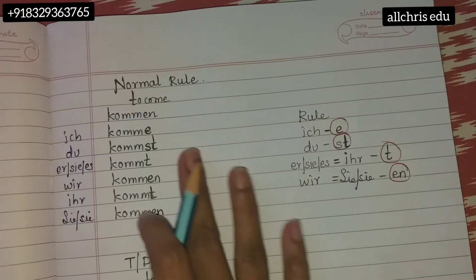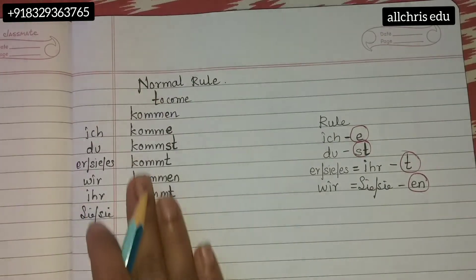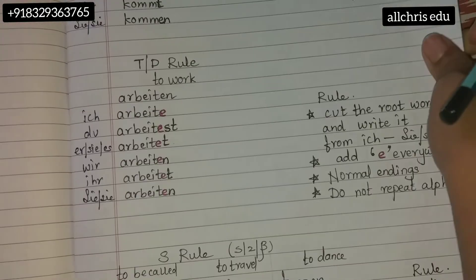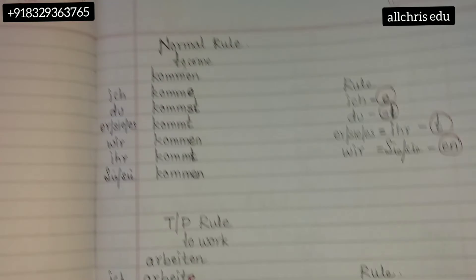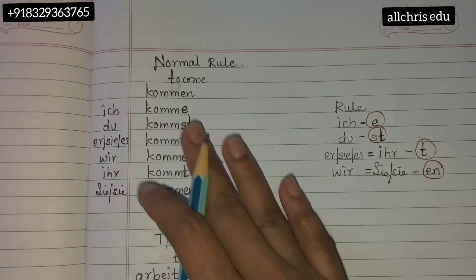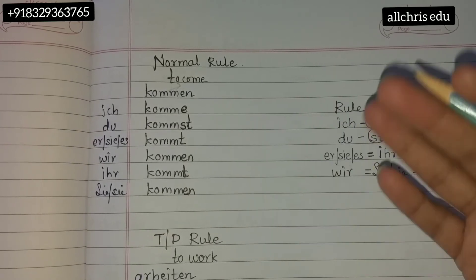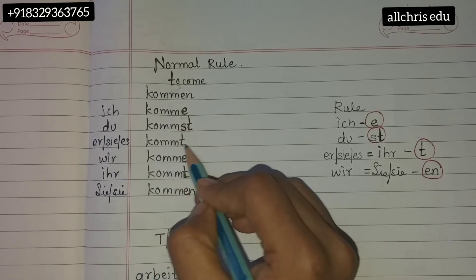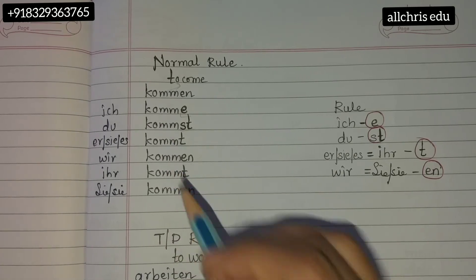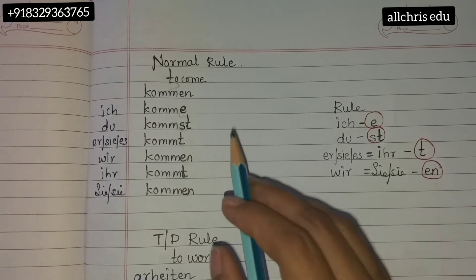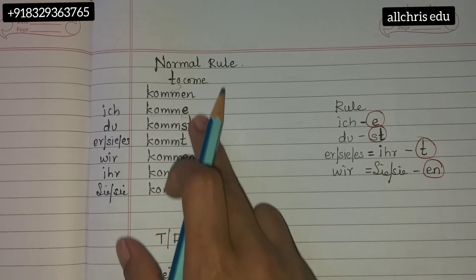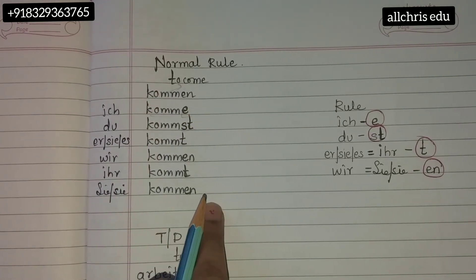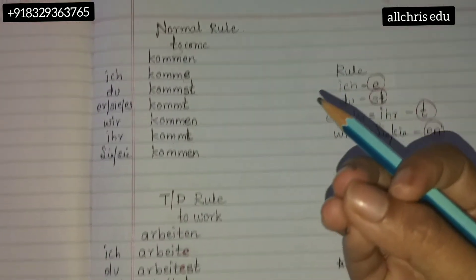Then comes the Normal Rule chart. Take one example verb, write its meaning. The Normal Rule conjugation ends with: e, st, t, en, t, en — the starting root word remains the same. I've written the root in blue and the endings in black intentionally because only the ending changes in the normal rule.